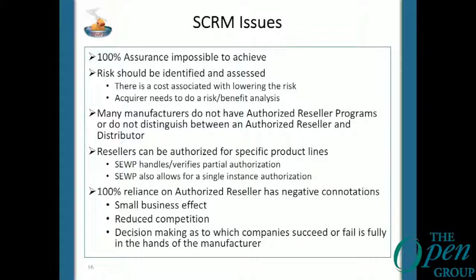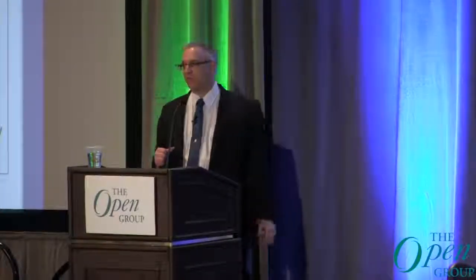For example, $10,000 to buy a router from an authorized reseller versus $5,000 to get it on eBay. If you're the acquirer, you do a risk-benefit analysis. If it's just a test system never part of your network, maybe you buy the cheap alternative. If it's going to be an integral part of your secure network, you look to get it from an authorized reseller. A lot of manufacturers don't have authorized reseller programs. We have 6,500 manufacturers on SUP — the full gamut from large publicly traded companies to mom-and-pop shops.